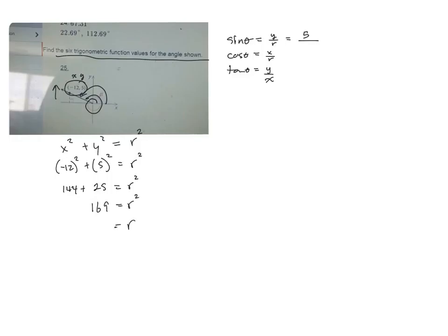So if I add those together, that's 169 r squared. So r is going to be a positive or negative square root of 169, which is 13. Now, r is always positive, so I can get rid of the negative there. It's just going to be a positive 13. Okay, so wherever I see an r, I can put a 13.